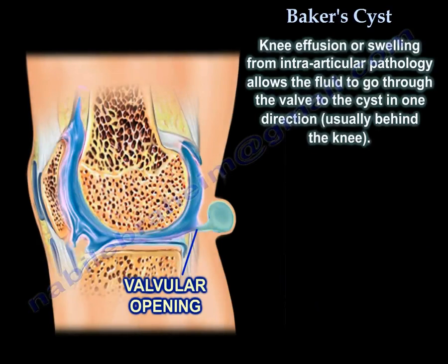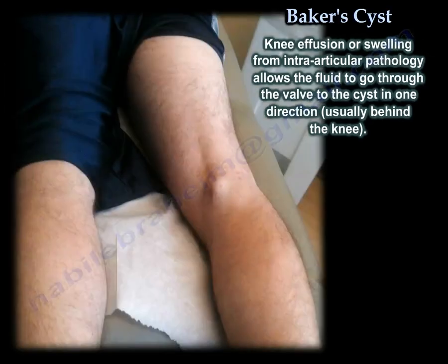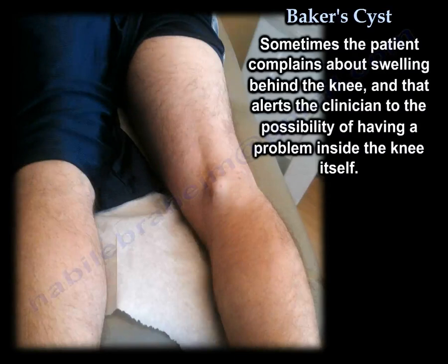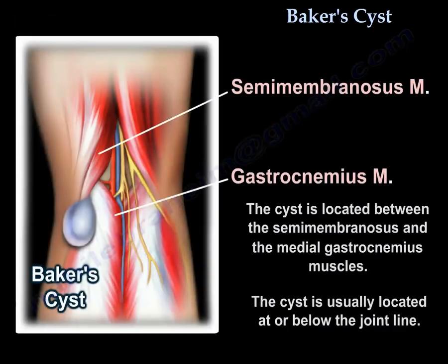Knee effusion or swelling from intra-articular pathology allows fluid to go through the valve to the cyst in one direction — usually behind the knee. Sometimes the patient complains about a swelling behind the knee, alerting the clinician to a possible problem inside the knee itself. The cyst is located between the semimembranosus and the medial gastrocnemius muscle, usually at or below the joint line.